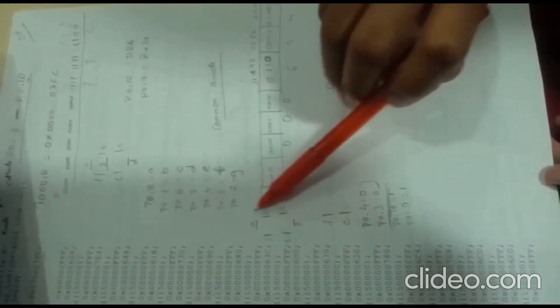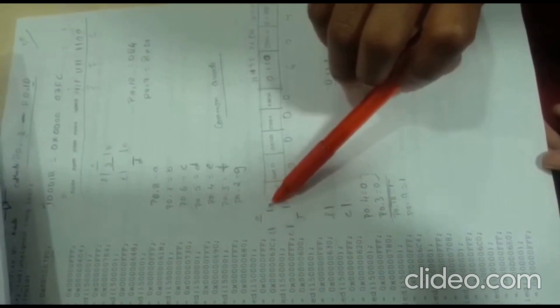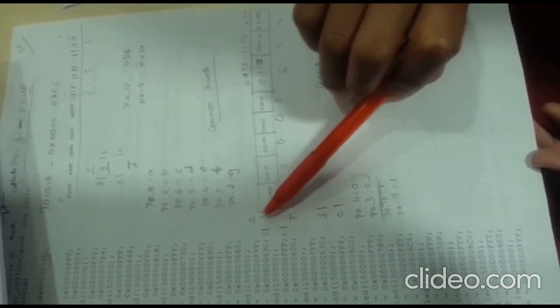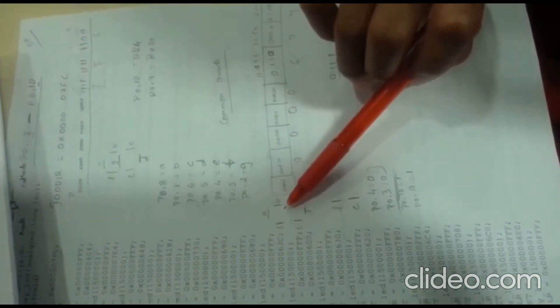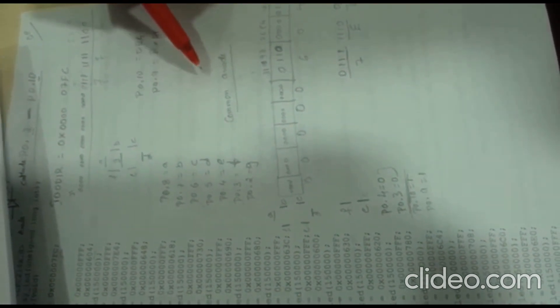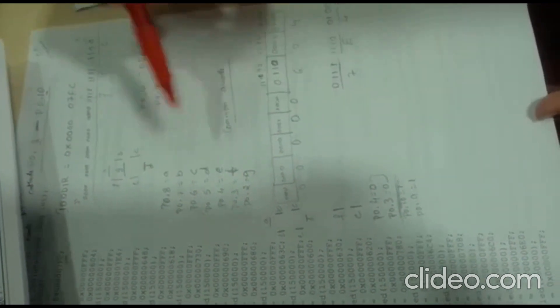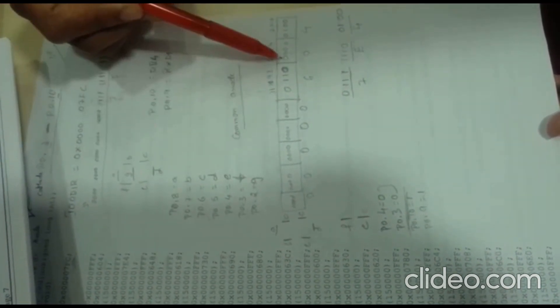Let's take the example of displaying zero. For zero, we use segments A, B, C, D, E, F — we are not using G. Since it is a common anode display, the segments we want to display are set to 0, and segments not used are set to 1. So A (bit 8) is 0, B (bit 7) is 0, and so on. G (bit 2) is not used, so bit 2 is 1.